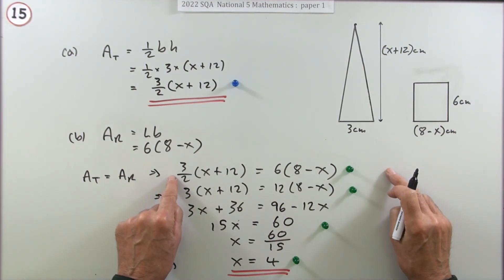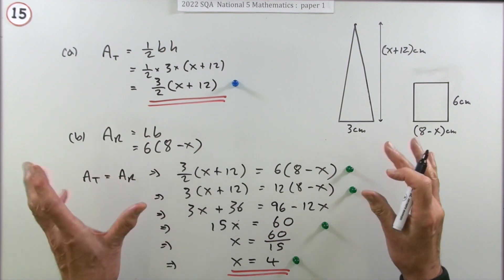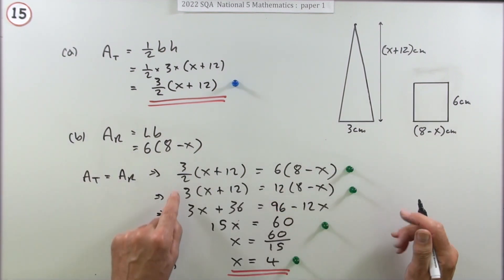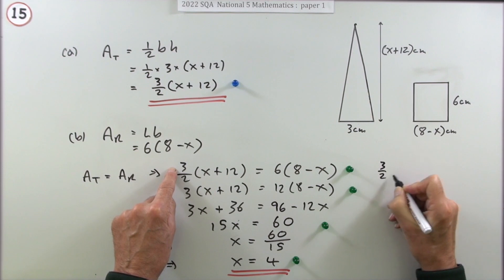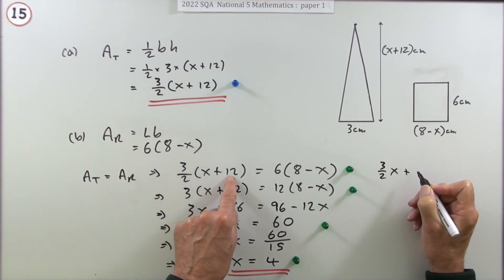Now you could have kept going with a fraction there I suppose, but usually what you do is you get rid of fractions straight away. The first thing you do with equations is get rid of fractions. But you could have written 3 upon 2x plus, now 3 upon 2 times the 12, well dividing by the 2 is 6, and 3 times 6 is 18.